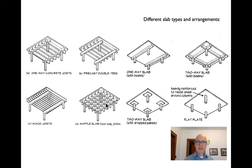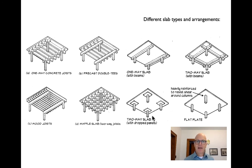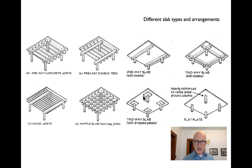A waffle slab is basically a one-way concrete joist system set perpendicular to itself. You can imagine the efficiencies: we have a hyperstatic two-way system, so we can span a great distance. The problem is that waffle slabs tend to be pretty heavy — there's a lot of concrete to deal with. Two-way flat slabs drop what are called column caps, basically thickening the slab around the column. You can think of these as giant expansions of the column only in the vicinity of the slab, using the perimeter area to resist punching shear.